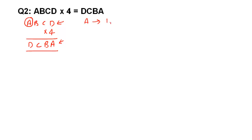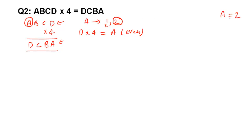It cannot be 0, otherwise it will make it a 3-digit number. So A can be 1 or 2 only. Now look at this: when D is multiplied by 4, it is giving you A. Four multiplied by any number gives an even number, so A must be even. That means A equals 2 — A cannot be 1. So A is equal to 2. Once we get any value, replace it: so this becomes 2 B C D multiplied by 4 equals D C B 2.